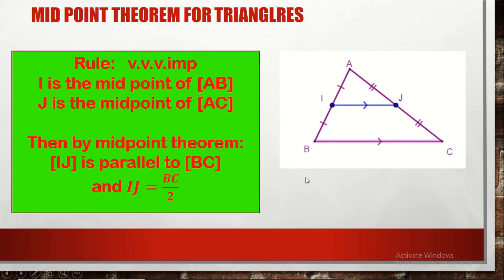If we have a triangle ABC, as you see in the figure, and we have I the midpoint of segment AB and J the midpoint of segment AC, then the segment joining these midpoints I and J is said to be the midsegment in this triangle. IJ will be parallel to the third side BC, and the length of IJ will be equal to half the length of BC. By midpoint theorem, IJ is parallel to BC and IJ equals BC over 2.